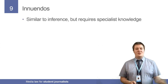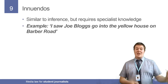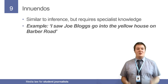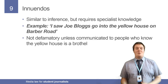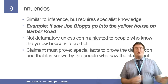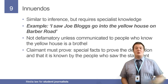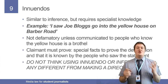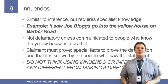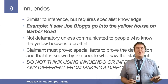An innuendo is similar to an inference but only applies to things that require specialist knowledge. For example, 'I saw Joe Bloggs go into the yellow house on Barber Road' is in itself an innocuous statement, but people who know that yellow house is a brothel would find that statement defamatory. The claimant must prove the special facts — that it was a brothel and that that information was known by people who saw the publication. Don't ever think that making an innuendo or an inference is any different from making a direct accusation.